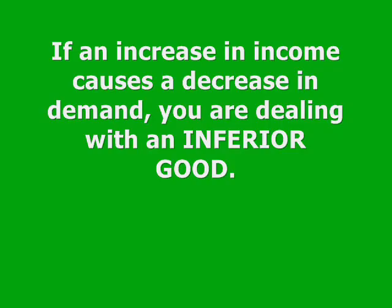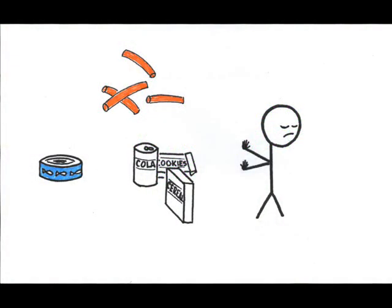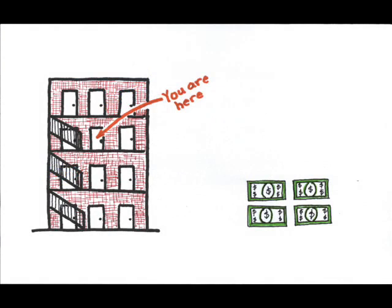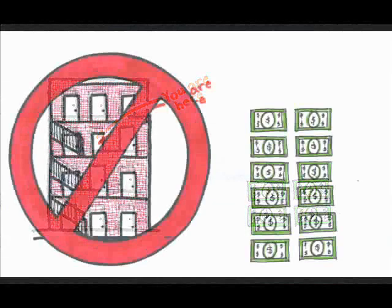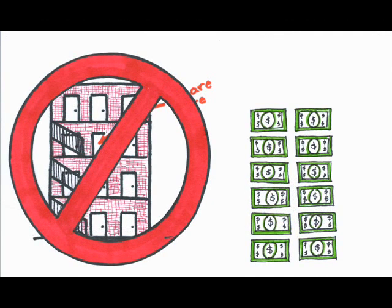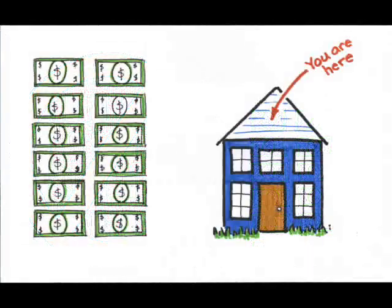You know, ramen noodles, mac and cheese, canned tuna, generic brands, that type of thing. We could even use the housing example again, where demand for apartments, or living with your parents, falls as your income rises and you look for a home of your own. In this example, the homes are a normal good, and apartments are an inferior good.